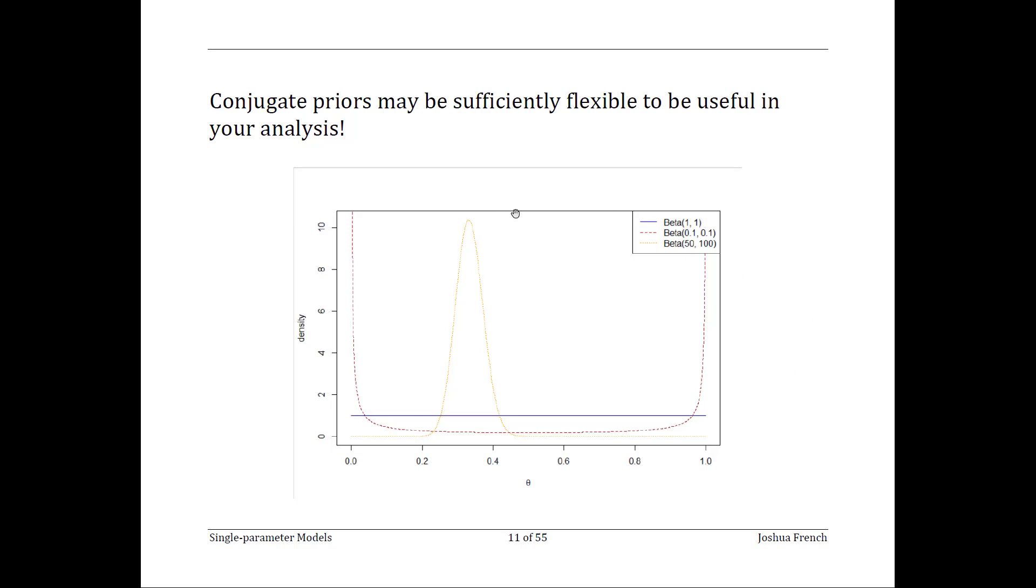In the plot displayed here, we see three examples of beta densities. A beta 11 is shown in blue, a beta 0.1 0.1 is shown in red with dashed lines, and a beta 5 100 is shown in orange dotted lines. You can see that the beta 11, the beta 0.1 0.1, and beta 5 100 all have very different shapes.